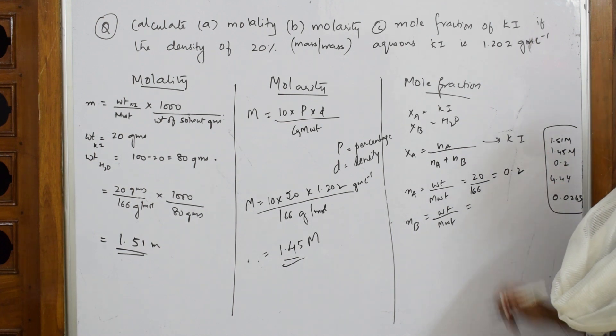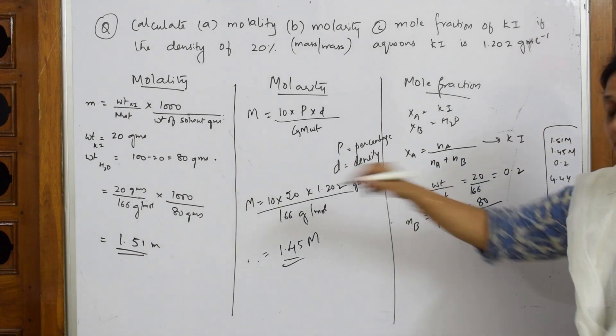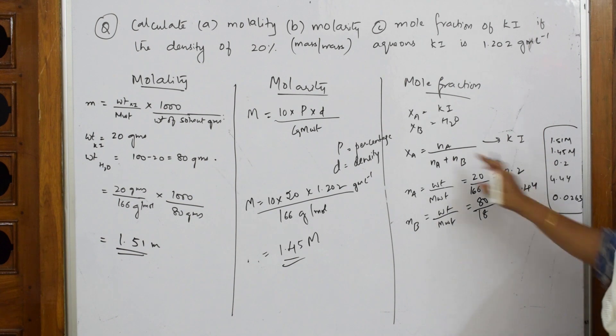Let us write for water. What is the weight of water? 80 grams. What is the molecular weight? 18 grams. When I solve, I get an answer of 4.44. Now, data is ready. I can substitute in this.